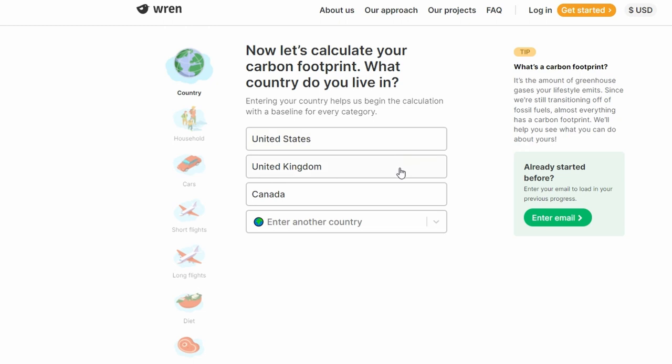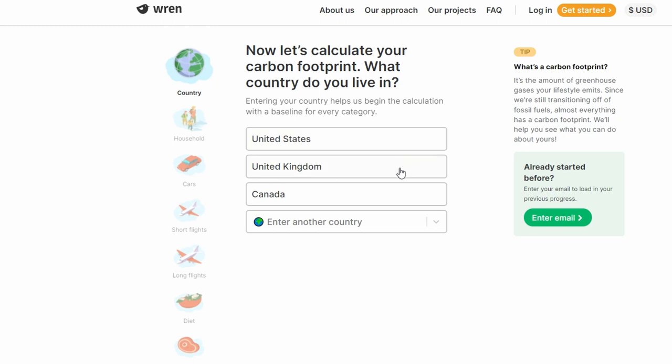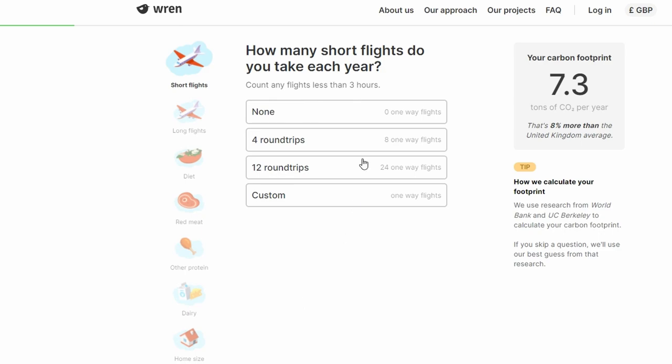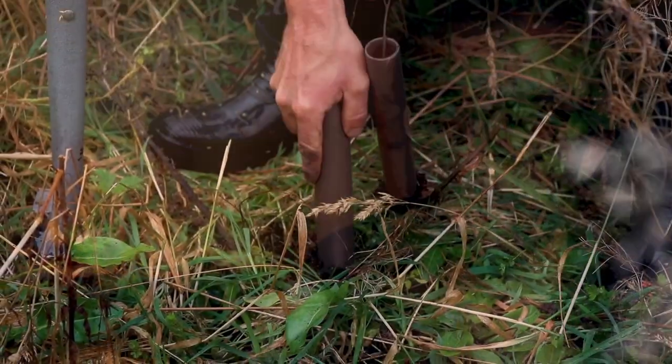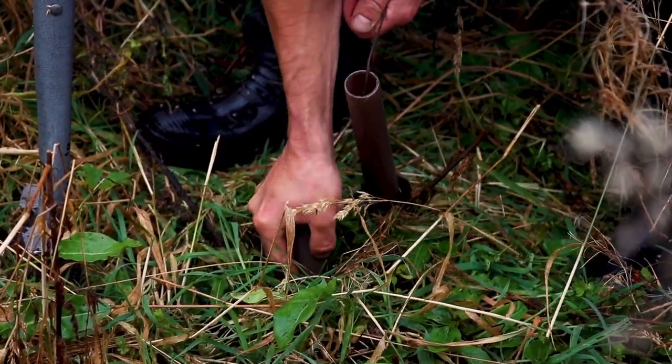allows you to actually calculate your own carbon footprint and then look at different ways to reduce it. You can also make a monthly contribution to offset your footprint because it goes towards funding diverse carbon reduction projects like tree planting, mineral weathering and rainforest protection.